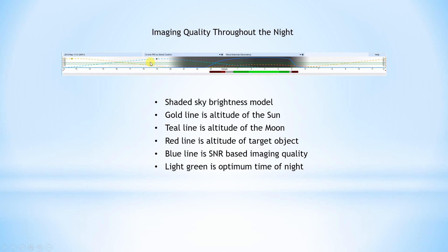The gold line is the altitude of the sun. The teal line is the altitude of the moon. The red line is the altitude of our target object. But most importantly, the blue line is the SNR-based imaging quality, and this is summarized at the bottom, where the green areas are the good times of night to image and the bright green area is the best.